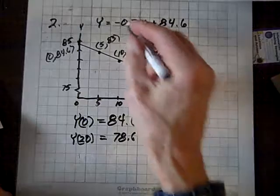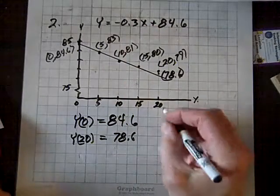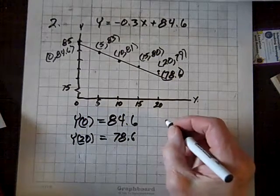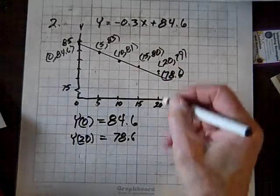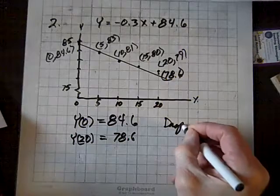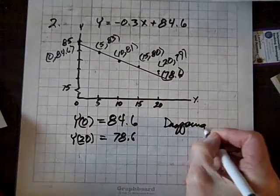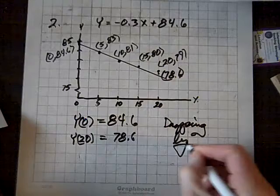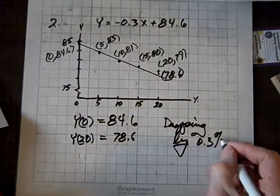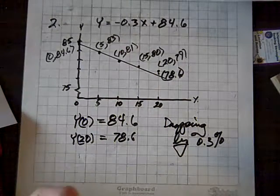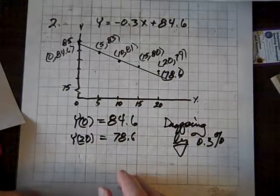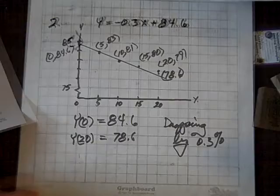In words, what that means is the percentage of fossil fuel production as a percentage of the total amount of energy is dropping by 0.3%. So, there's a 0.3% reduction, drop in fossil fuel production as it relates to total production.